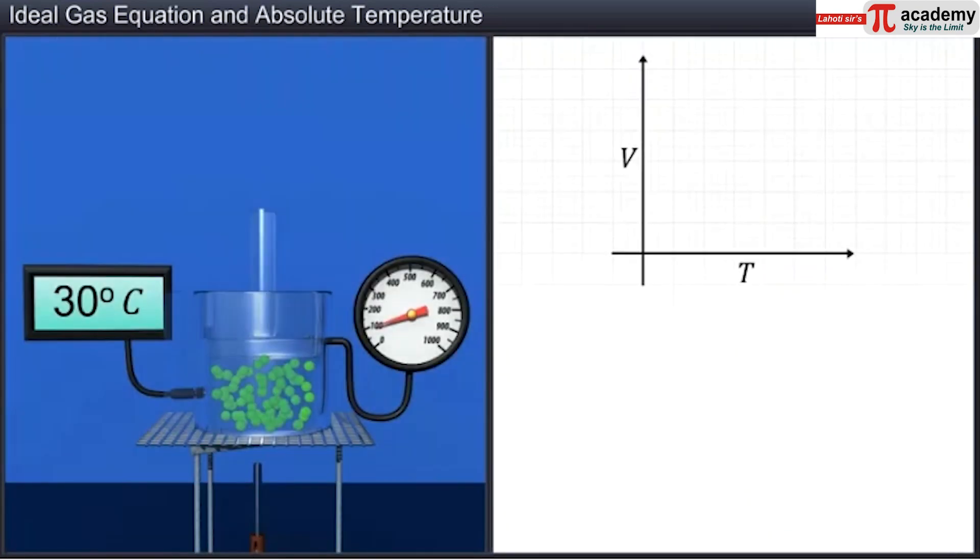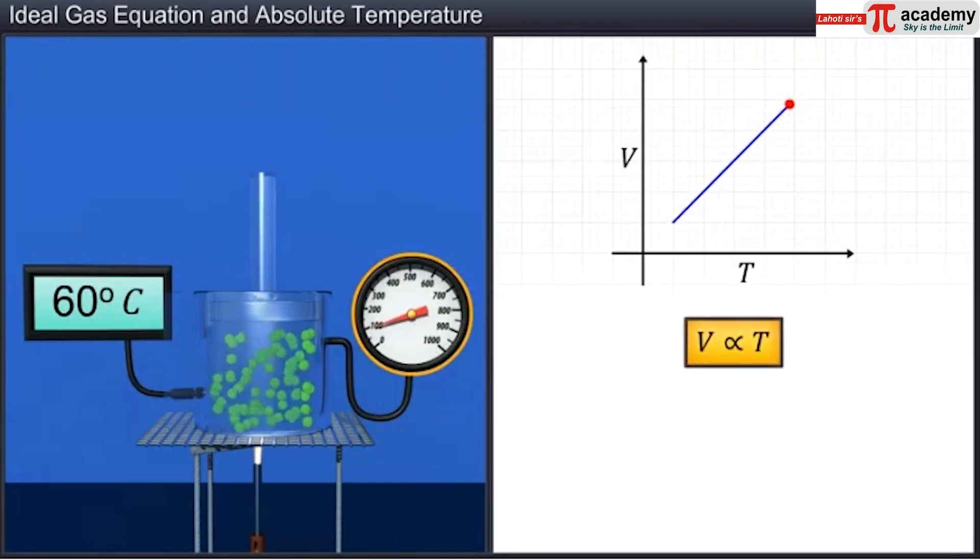According to Charles' law, at constant pressure, the volume of a given mass of gas is directly proportional to its temperature T.